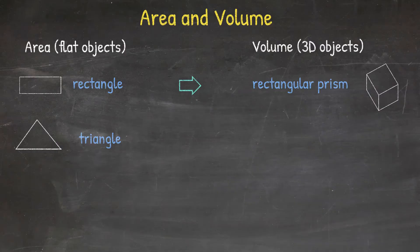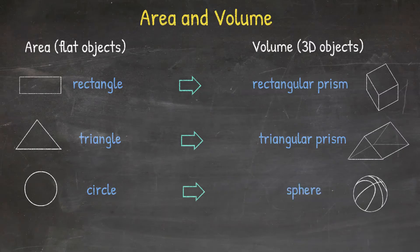It could be a triangle as a flat object or a triangular prism as a 3D object. While a circle is a flat object, a sphere or ball is a three-dimensional object. We will calculate areas for flat objects and calculate both area and volume for three-dimensional objects.